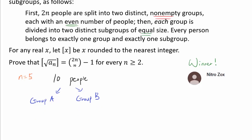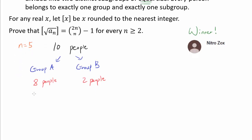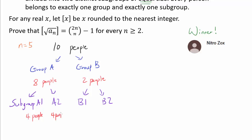So each group has an even number greater than or equal to 2 people. For example, group A may have 8 people and group B may have 2 people. We divide each group into 2 subgroups of equal size, giving subgroups A1 and A2, and subgroups B1 and B2. A1 and A2 are going to have 4 people each, and subgroups B1 and B2 are going to have 1 person each.